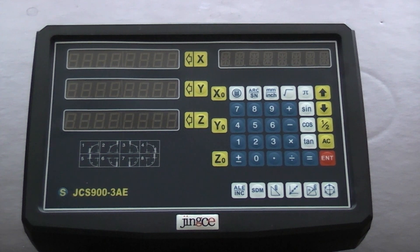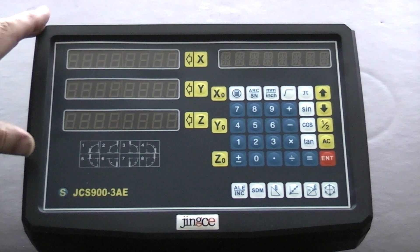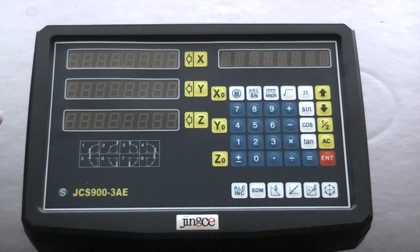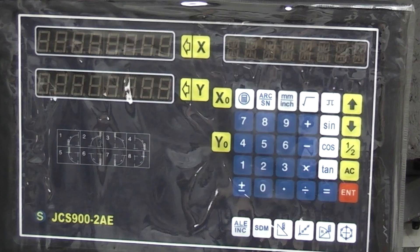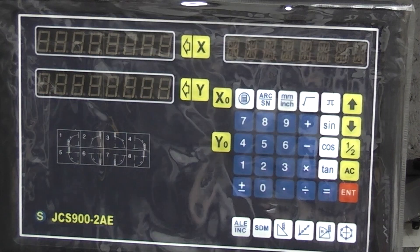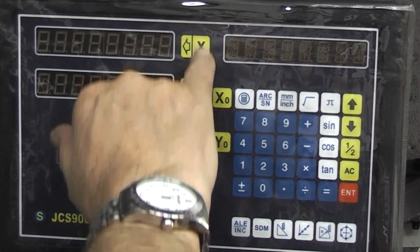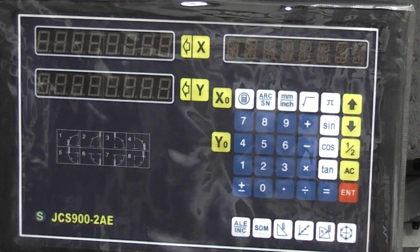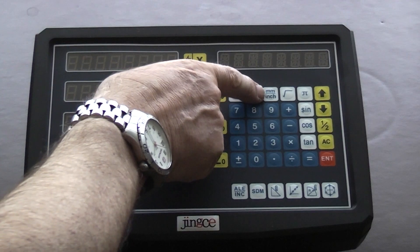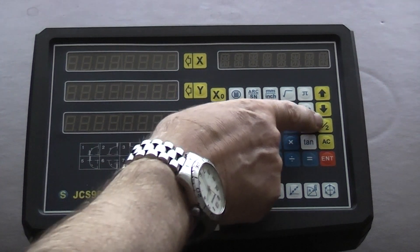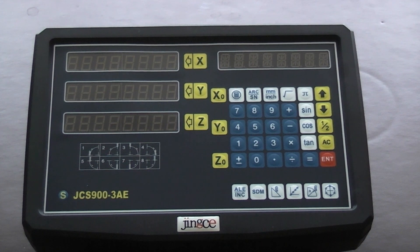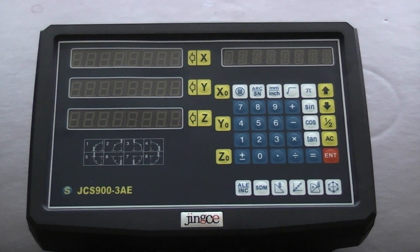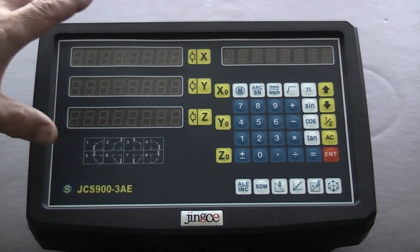I'll start off with the digital readout display. This display is 3 axis, and that means it's X, Y and Z. This is the 2 axis reading, you just have the X and Y. Everything else is the same. It'll measure inches or millimetres, you can halve the distance between 2 points. So what I'll do is go through this, show you what you get in the kit. First of all you get the display. Let me show you on the back.